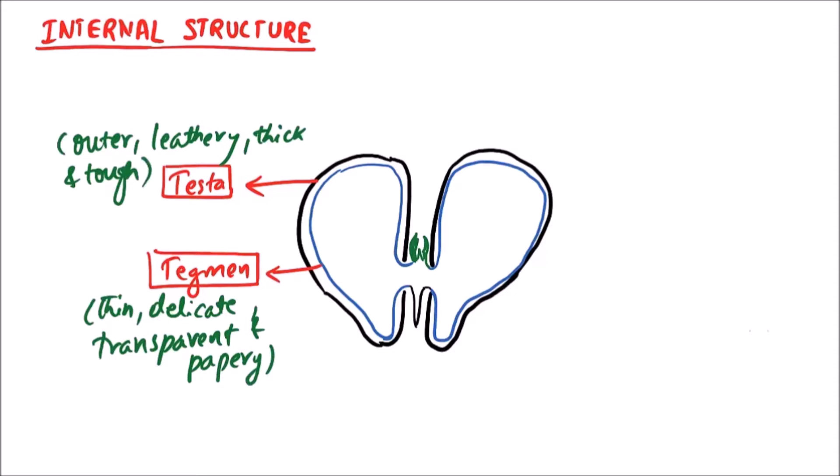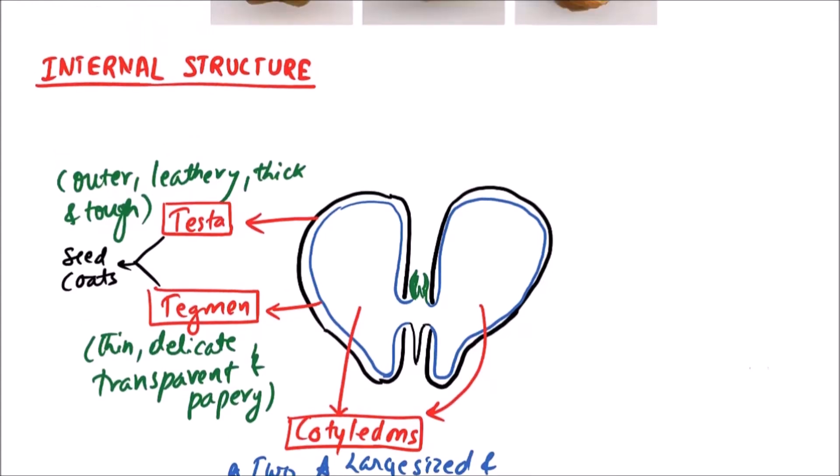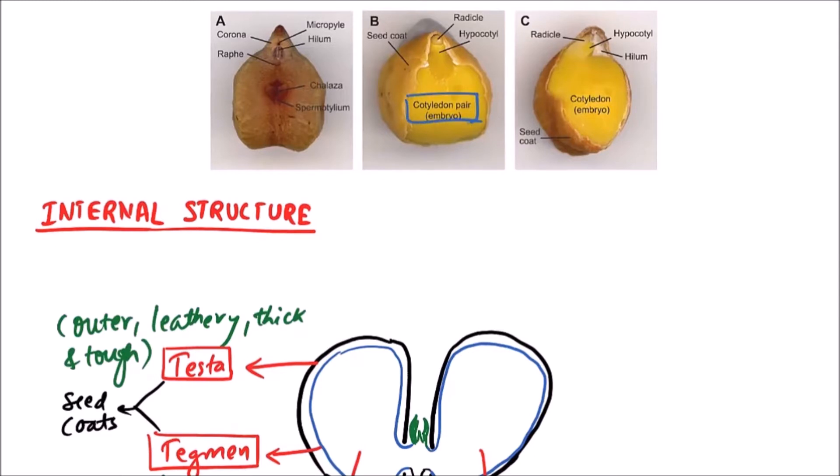These are the seed coats. Now we can observe the cotyledons. The cotyledons are 2 in number, large sized and yellow coloured.